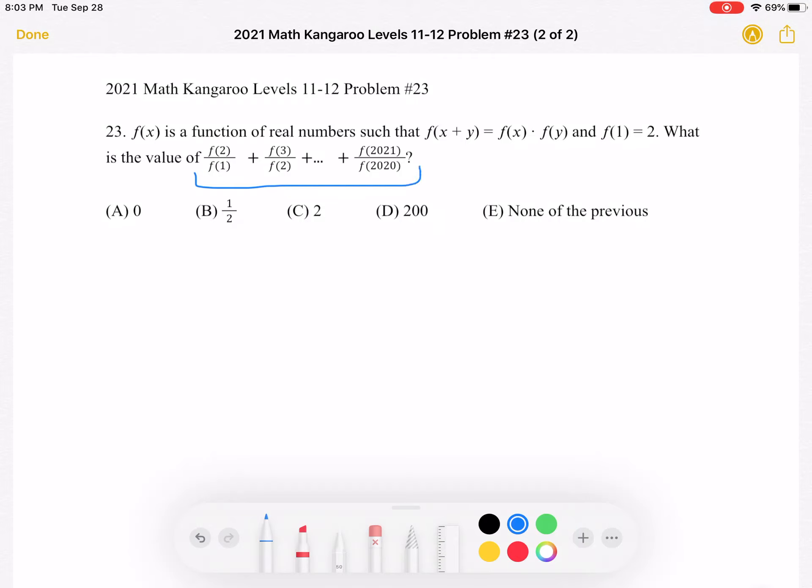each of the terms being added has a somewhat similar format. First we have f(2) divided by f(1), then we have f(3) divided by f(2), and so on, until we have f(2021) over f(2020).